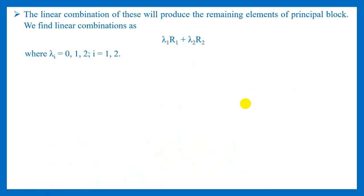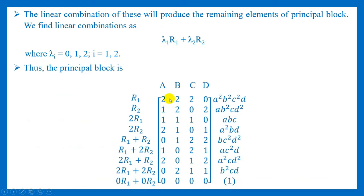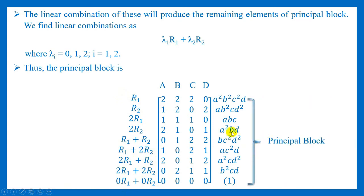Now that we have the independent treatment combinations of the principal block, we find their linear combinations to get the remaining treatment combinations. Naming them r1 and r2, the combinations 2r1, 2r2, r1+r2, r1+2r2, 2r1+r2, 2r1+2r2, r2, and 0r1+0r2 give the remaining elements. Generalizing, we write λ₁r1 + λ₂r2 where both λ₁ and λ₂ can assume values 0, 1, or 2.